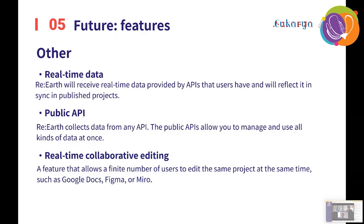Other features include support for real-time data. This allows Reels to receive real-time data provided by external APIs and display it in published projects. In addition, by developing public APIs, data can be collected from any API to Reels and used as a data platform. Finally, there is real-time collaborative editing. This will allow multiple people to work without data conflicts, just like Figma, Google Docs, and Miro. I believe it will be the first app that allows real-time collaboration on a GIS platform.